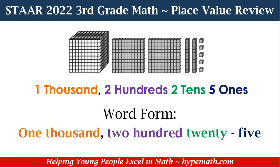Now let's look at the number in word form. Word form is just what it says — writing the words for the numbers. So we have 1,225 written as: one thousand, two hundred twenty-five.